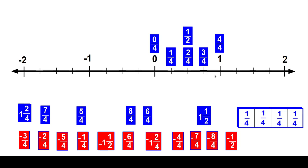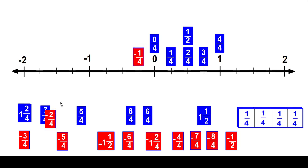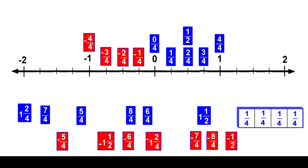Now I'm going to do the opposites — that means they'll have the same absolute value but on the opposite side of zero. So the opposite of one fourth is going to be negative one fourth. And then I would need negative two fourths, negative three fourths, and negative four fourths. Negative two fourths can be simplified to negative one half, because two fourths is the same as one half — they are equivalent. You did great.